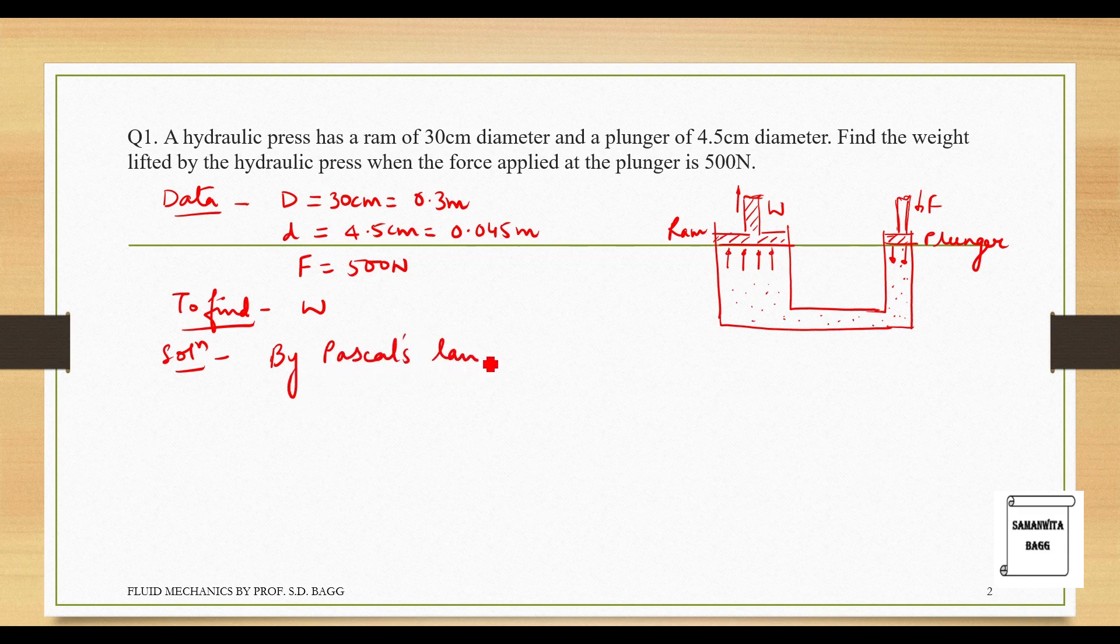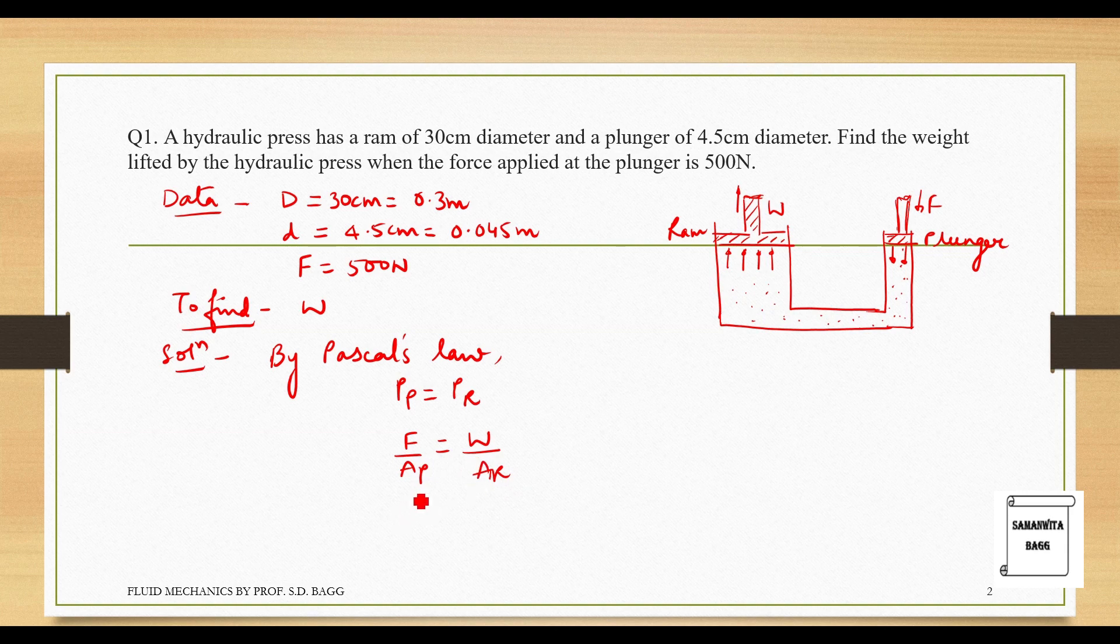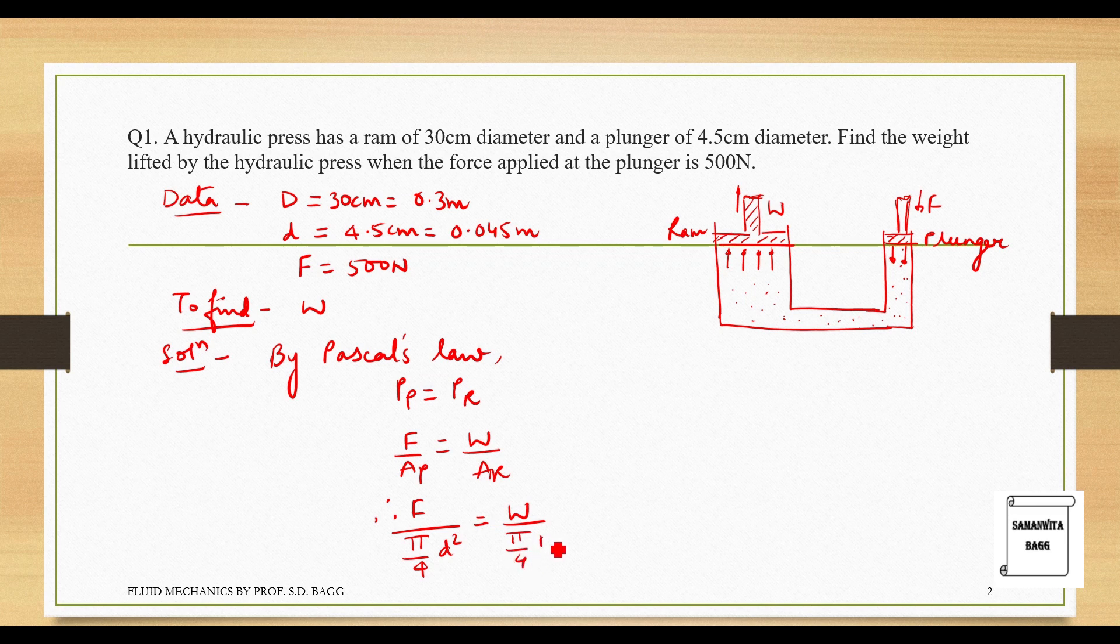The pressure at the plunger end will be equal to the pressure applied at the ram end. This pressure will be nothing but F upon area of plunger and this will be weight lifted upon area of the ram. So, when I substitute, this will be F upon area of plunger is π by 4, small d square. This will be W upon π by 4, capital D square.